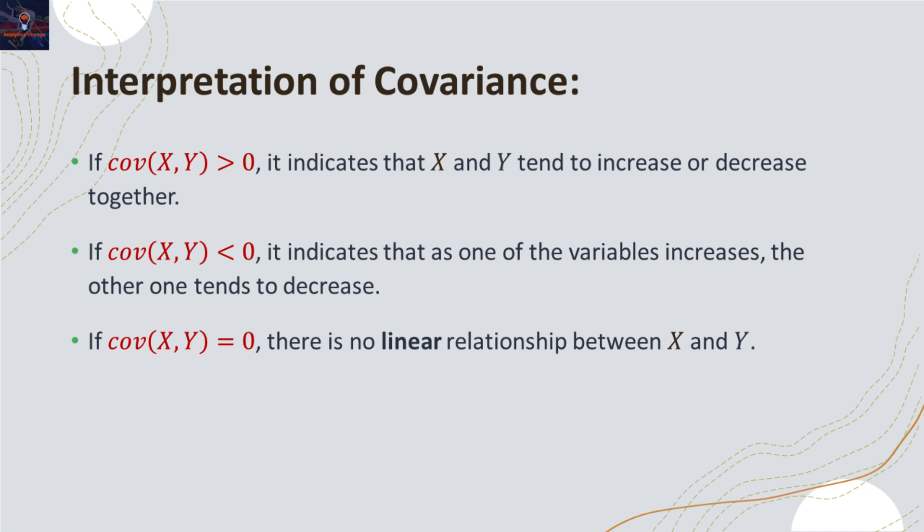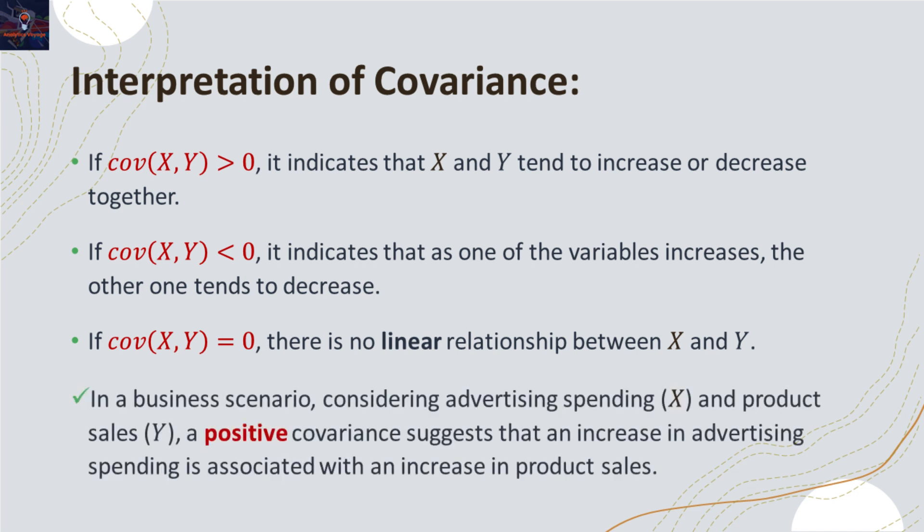And if covariance is zero, it means that there is simply no linear relationship between them. As an example, let's consider advertising spending and product sales.